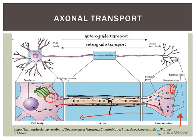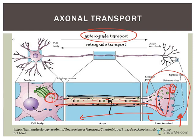Another example of anterograde transport: there is a structure in your brain called the hypothalamus that produces a couple of hormones. These are transported down via anterograde axonal transport and stored in the posterior pituitary, where — under the right stimulation — they're released into your bloodstream. The two hormones I'm talking about are ADH (antidiuretic hormone) and oxytocin. They're actually produced in the hypothalamus and travel down to the posterior pituitary via anterograde axonal transport.